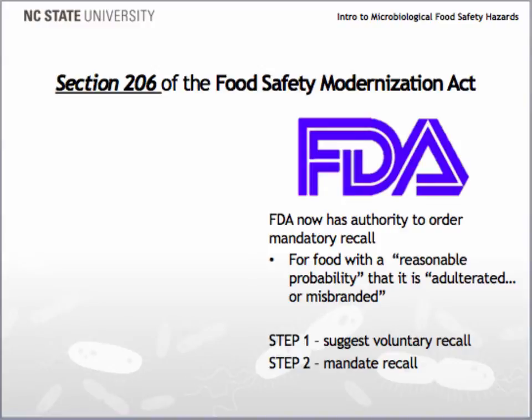In order to issue such a mandatory recall, the FDA must first provide the responsible party with the opportunity to initiate a voluntary recall. If the party does not discontinue distribution and initiate the recall, the Secretary of the U.S. Department of Health and Human Services is empowered to order that distribution stop and require a recall.